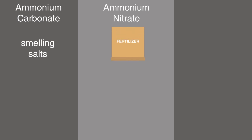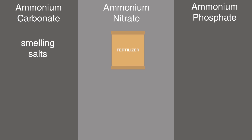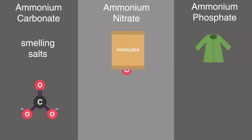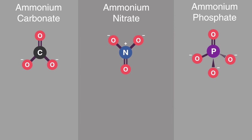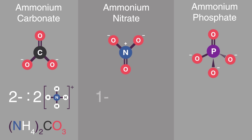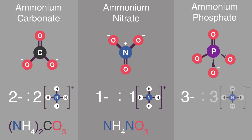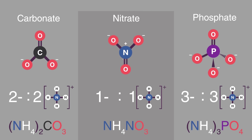Ammonium nitrate is an important fertilizer, and ammonium phosphate is not only a fertilizer but can also be used to flame-proof wood and clothes. Here are the carbonate, nitrate, and phosphate anions — can you write the chemical formulas of the matching ammonium salts? The carbonate ion has a 2− charge, so to balance this we need two ammoniums. The nitrate is −1, so we have a one-to-one ratio. The phosphate is 3−, so three ammoniums are needed — pay attention to the use of brackets here.